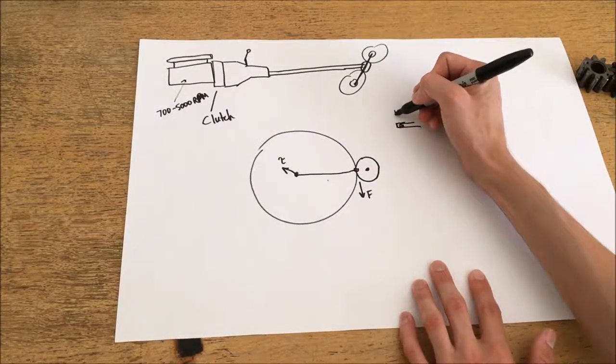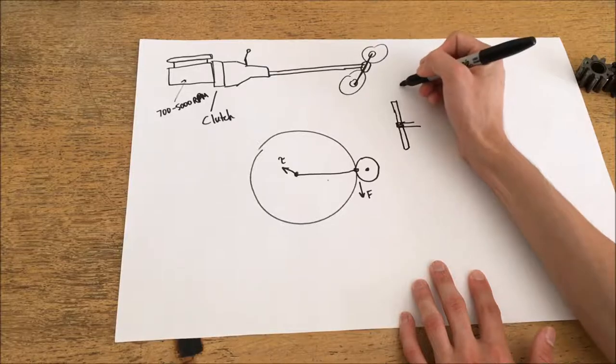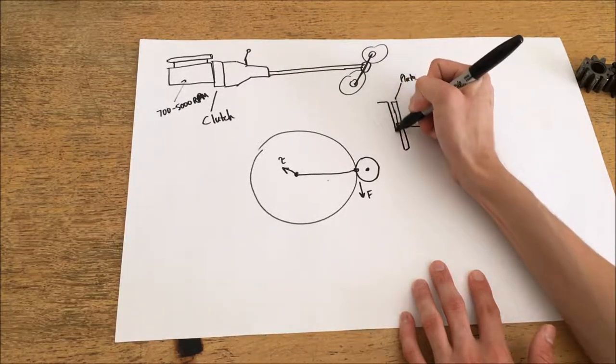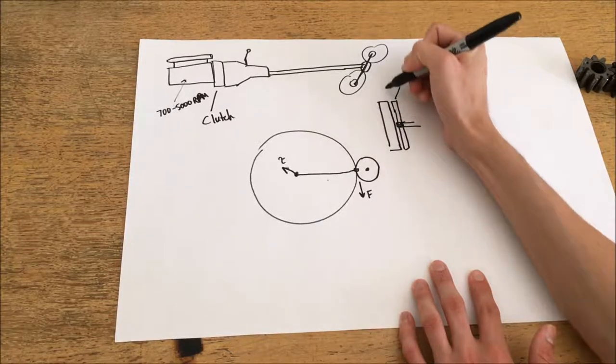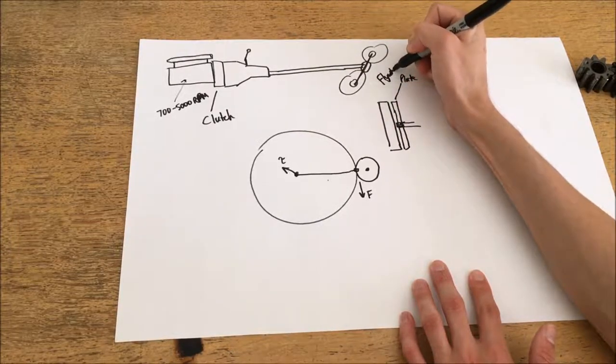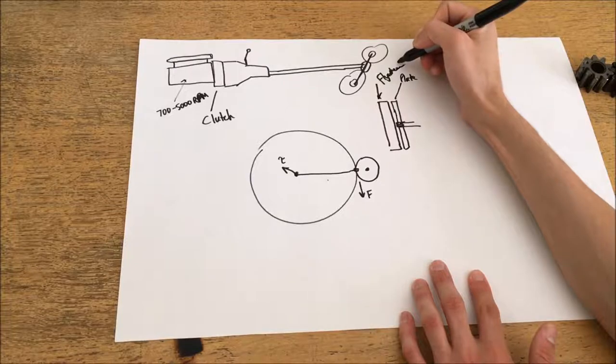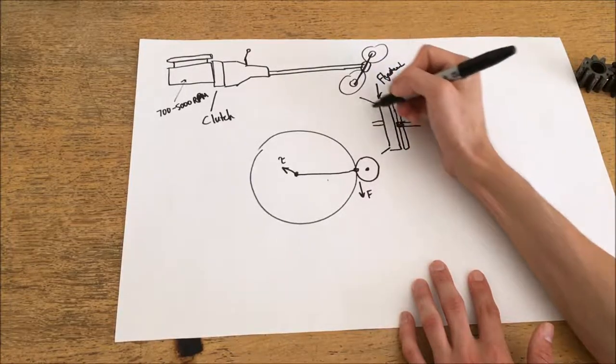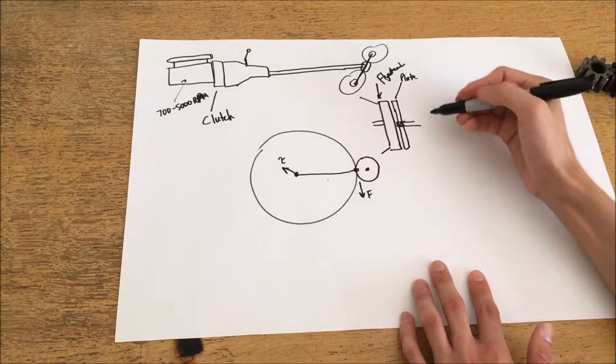That would be sort of like this would be your clutch plate and then here would be the flywheel of the engine and the flywheel would be connected to the crankshaft of the engine. So this part here on this side is the engine, this side here is the transmission.